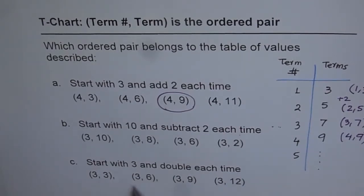Then C is start with 3 and double each time. So this is your next question. And the choices are (3, 3), (3, 6), (3, 9), (3, 12). So write down your answers and then see my suggestion.